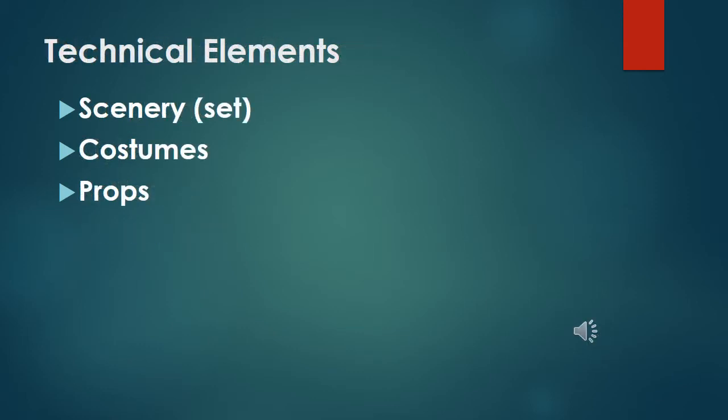Technical elements include Scenery or Set — the theatrical equipment, such as curtains, flats, backdrops, or platforms, used in a dramatic production to communicate environment. Costumes: clothing and accessories worn by the actors to portray character and period. Props, short for properties: any article, except costume or scenery, used as part of a dramatic production — any movable object that appears on stage during a performance, from a telephone to a train.